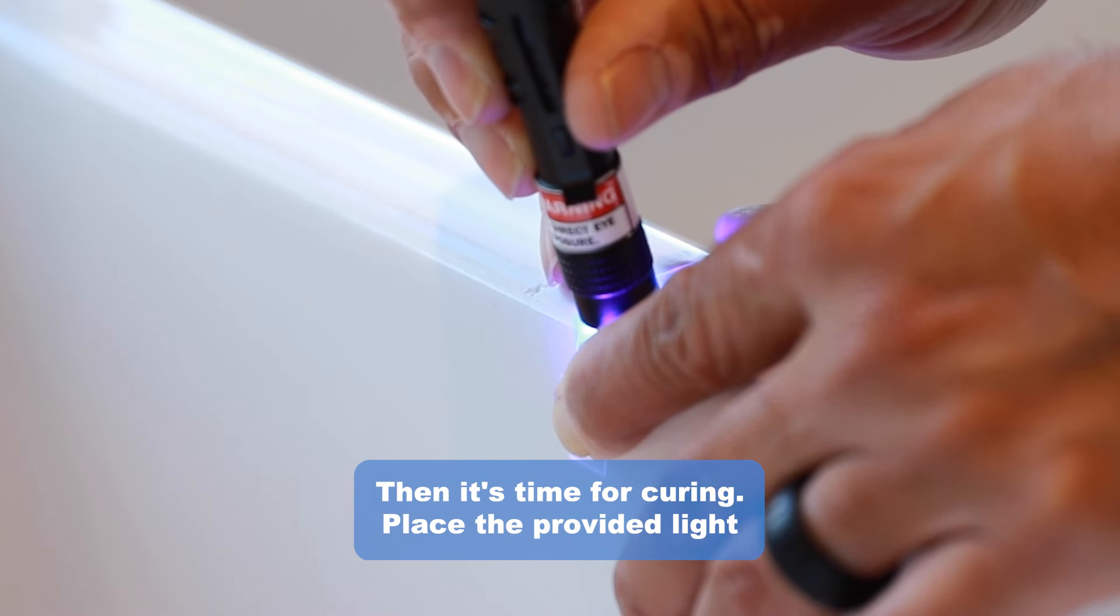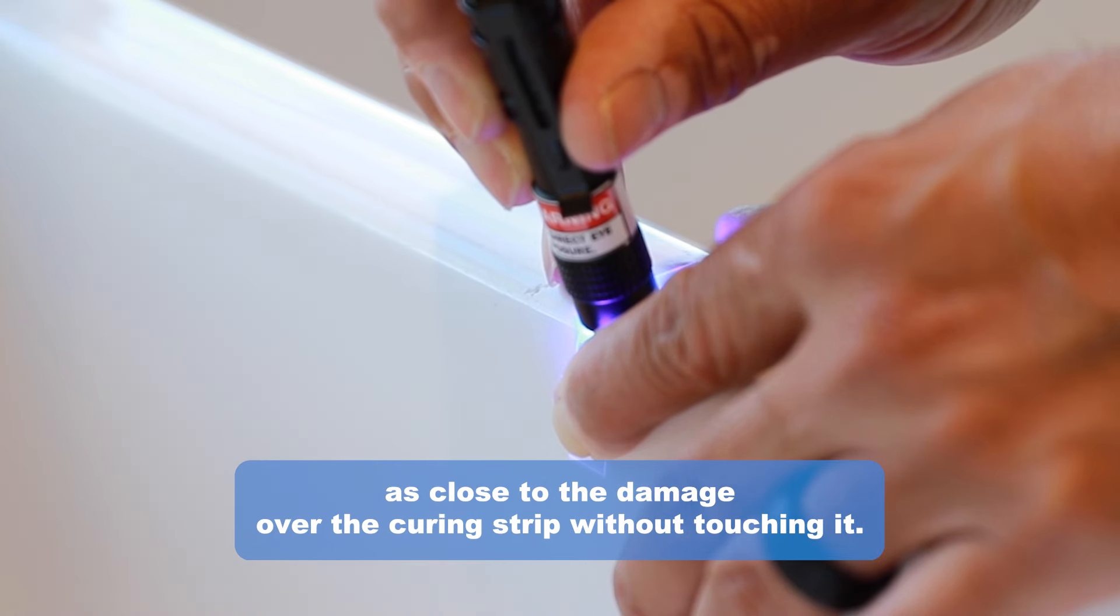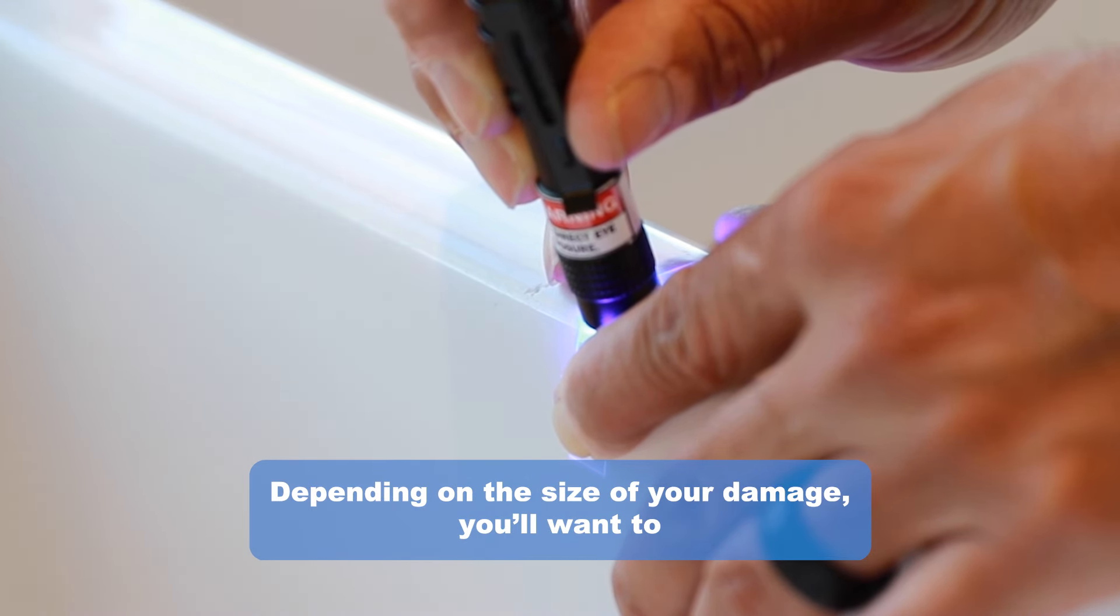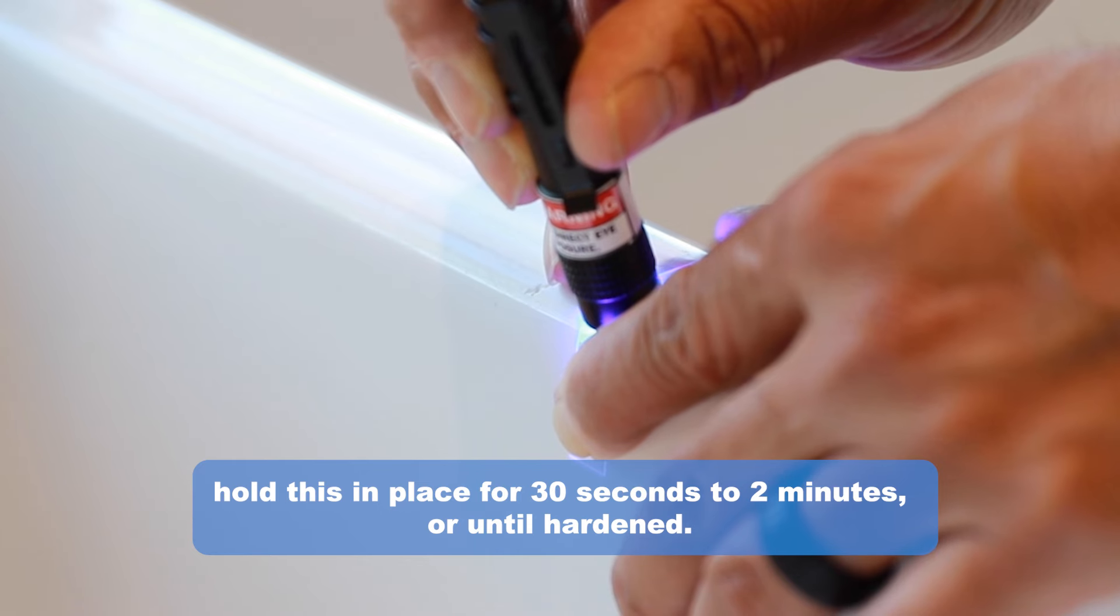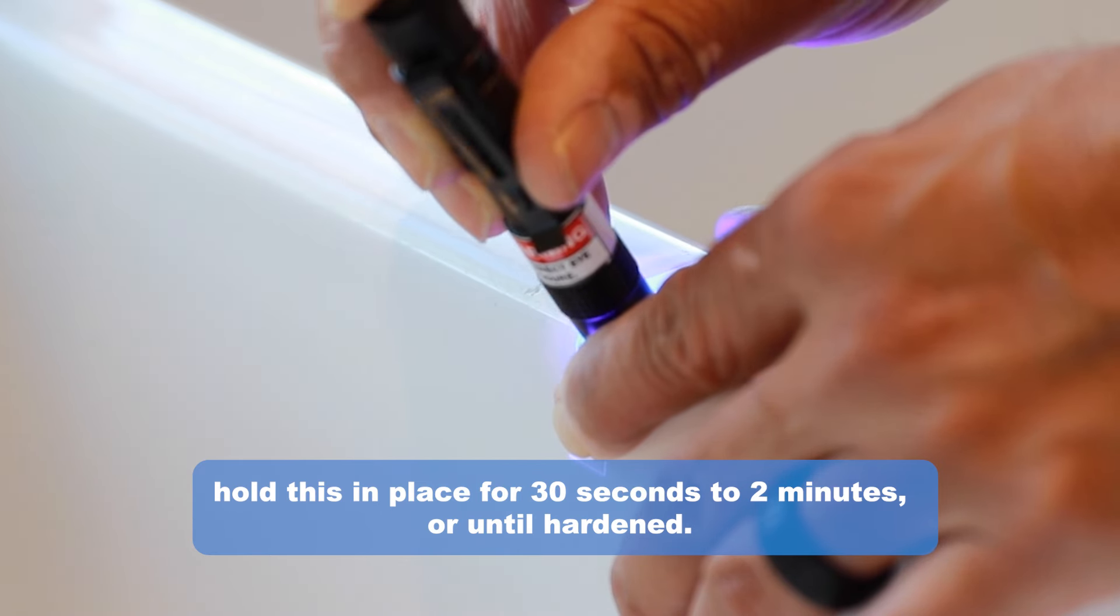Then, it's time for curing. Place the provided light as close to the damage over the curing strip without touching it. Depending on the size of your damage, you'll want to hold this in place for 30 seconds to 2 minutes or until hardened.